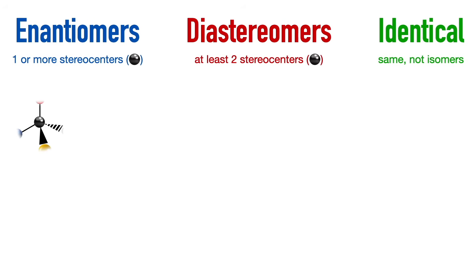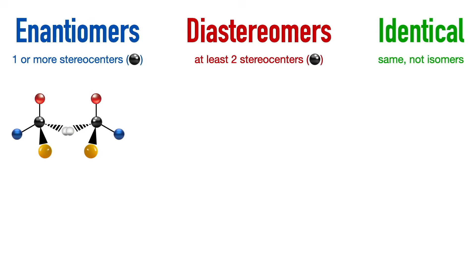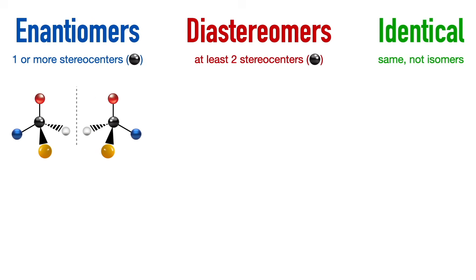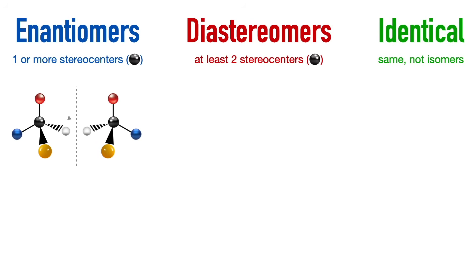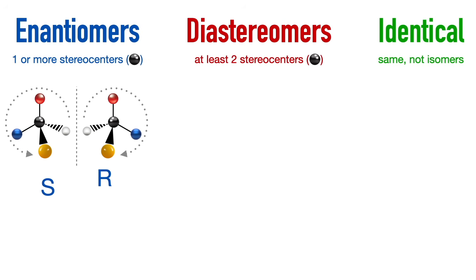Enantiomers are molecules with the same molecular formula and connectivity that are non-superimposable mirror images of each other when the molecules are facing each other, meaning the substituents around the stereocenters are oriented in opposite directions, which means they have opposite absolute configurations at their stereocenters. So if one is R configuration, the other is S configuration, or vice versa.